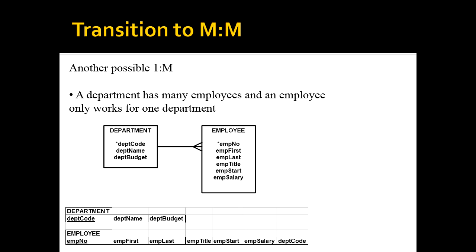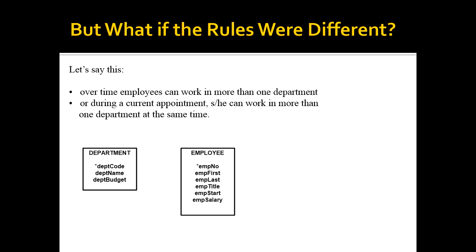You have to have an association table, as it's sometimes called, or an intersection table is the term I usually use, that supports information about the relationship between the two. So just to examine a little different scenario: over time, employees can work in more than one department. Wait a second. We had always that an employee was in one department. The department had many employees, but it was one-to-many and then many-back-to-one. So if an employee could work in many departments during a current appointment or job, he could work in more than one department at the same time. How would we model that?